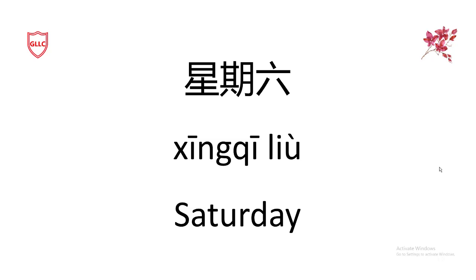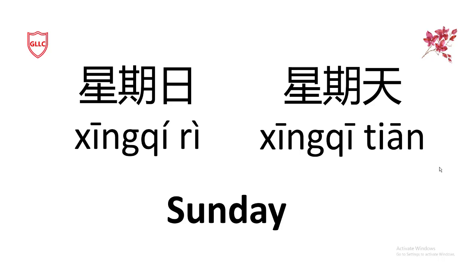Now for the last day, Sunday — the seventh day — you might guess it would be Xing Qi Qi, but actually it is not. Instead, they say Xing Qi Ri or Xing Qi Tian for Sunday. Tian means 'day,' so both Xing Qi Ri and Xing Qi Tian are correct and you can use either one.